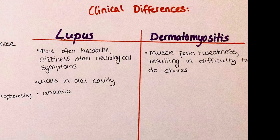Ulcers in the oral cavity and anemia are more frequently seen in lupus. More pathognomonic for dermatomyositis is the pain and weakness in the muscles, leading to difficulty getting up from a chair, lifting the arms overhead, or performing tasks requiring fine motor skills. For both diseases, it is typical to experience a skin rash, fatigue, photosensitivity, and joint pain. However, in lupus the skin rash will more frequently manifest specifically on and around the nose, forming the shape of a butterfly.